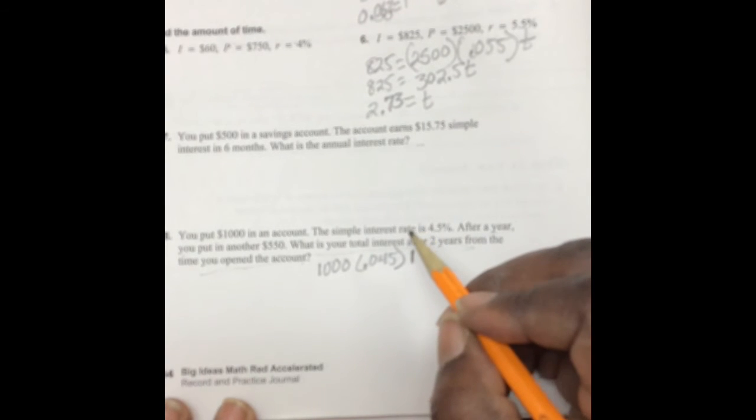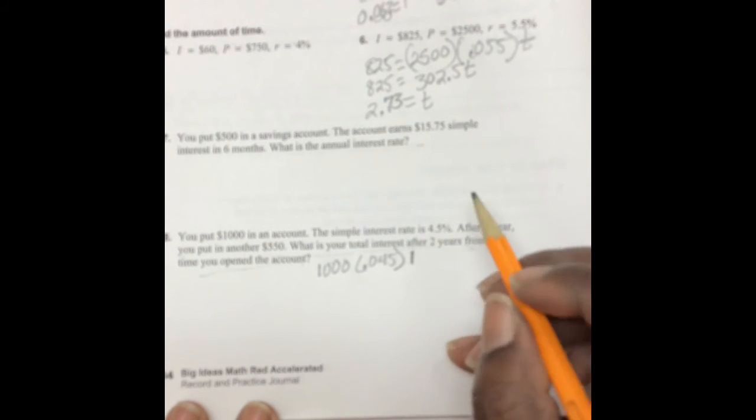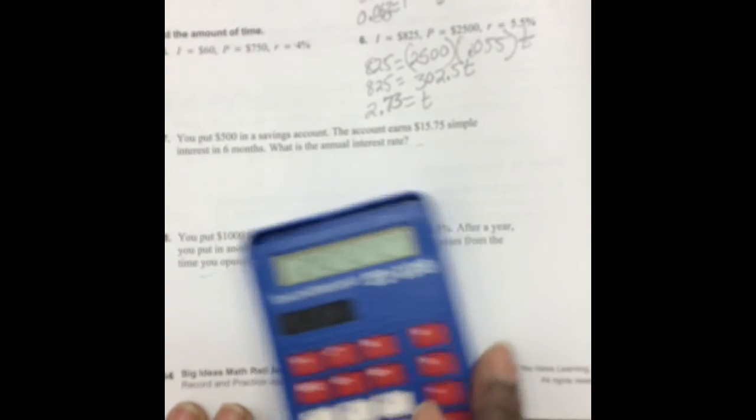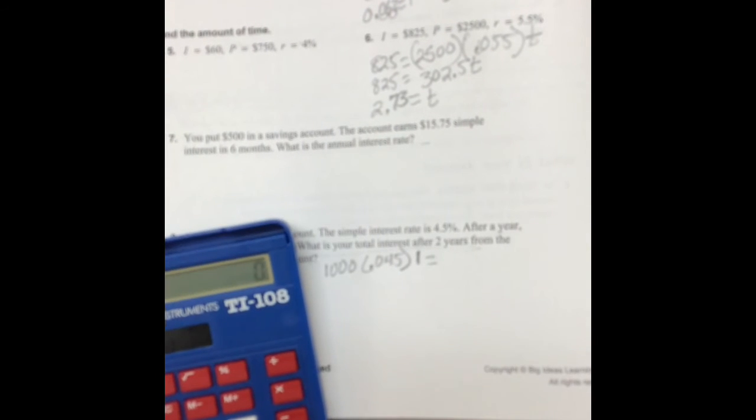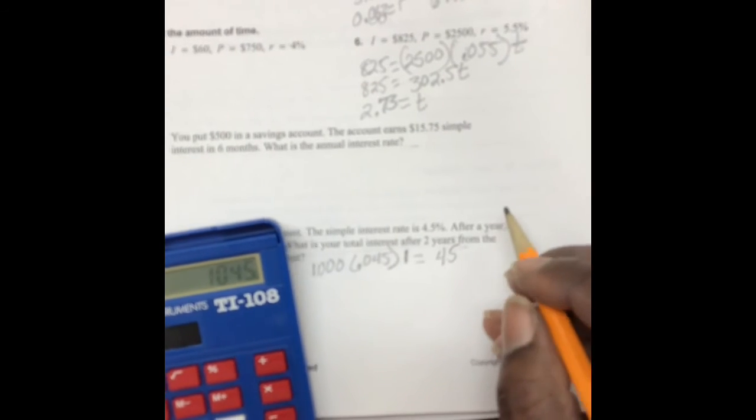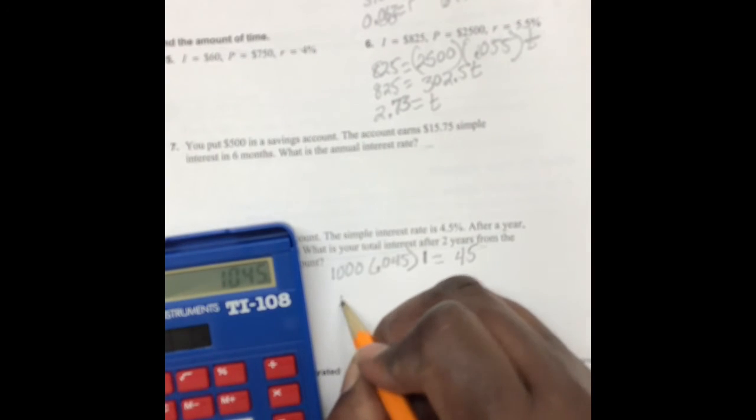So you put $1,000 into the account. That's what you started with. The simple interest rate is 4.5%, so that's 0.045 after a year. So you did that for one year. So let's find interest for that. Let's multiply those out. 1,000 times 0.045 times 1, and you got 45. So you take this 45 and add it to your 1,000. And so at the end of one year, you have $1,045.